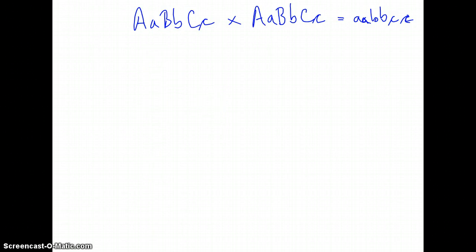What we'll do is calculate these odds individually. The odds of this parent passing on a little a is one in two. Odds of this parent passing on a little a, again, it's one in two. So we multiply this together. That creates the odds of one in four. What are the odds that the parent will pass on a little b? Again, one in two. This parent, a little b, one in two. Again, the overall odds, one in four.